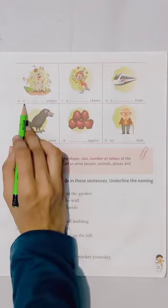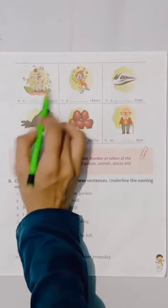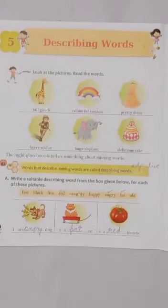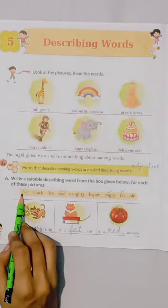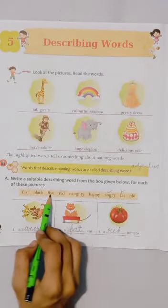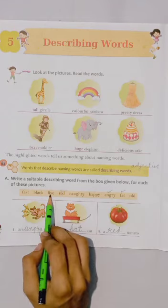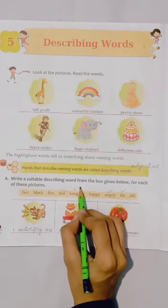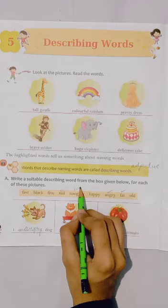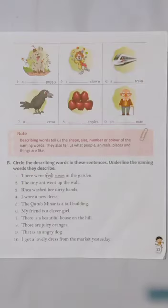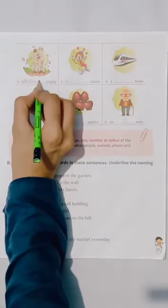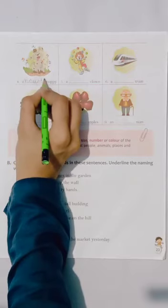Fourth part. A dash puppy. See the picture carefully and then come to the help box. Fast? No. Black? No. Five? No. Naughty? Yes! The puppy is naughty. Naughty means sharati. So let's write N-A-U-G-H-T-Y, naughty.